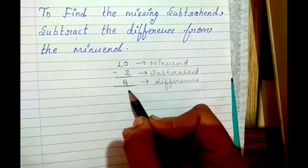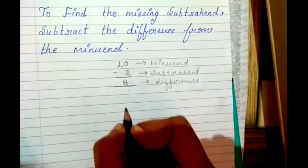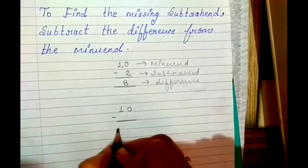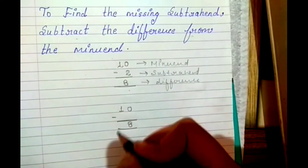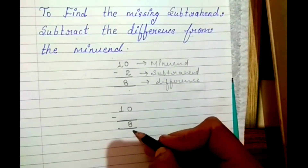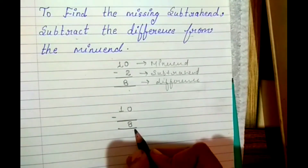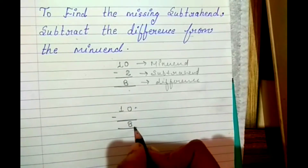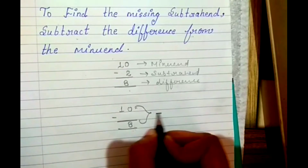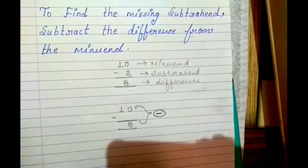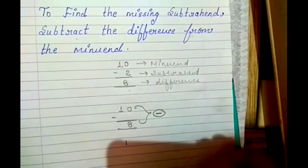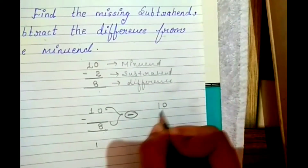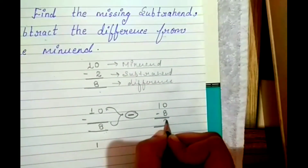उसके बाद, अब अपने पास जैसे कि 10 दिया हुआ है, minus कुछ, और answer 8 है। That means 10 में से क्या minus करें कि 8 आ जाए। यदि आपका question ये है, तो इसमें अपन क्या करते हैं - जो minuend होता है, उसमें से difference को minus कर देते हैं। जैसे कि 10 minus 8 किया तो क्या आ जाएगा - 2.